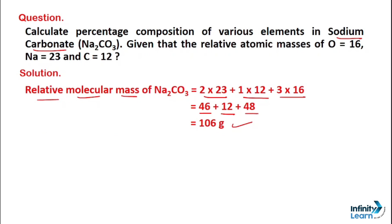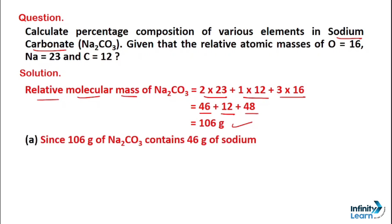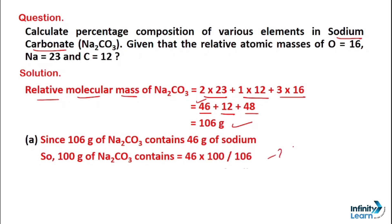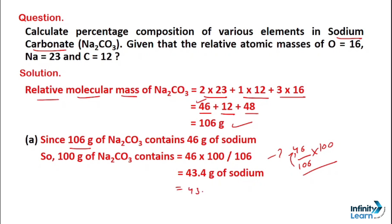Since sodium is the first element, let's first calculate sodium's percentage in sodium carbonate. The total relative molecular mass is 106 grams, of which 46 grams is sodium. To find the percentage in 100 grams of sodium carbonate: 46/106 × 100 = 43.4 grams of sodium. So the percentage of sodium in sodium carbonate is 43.4%.